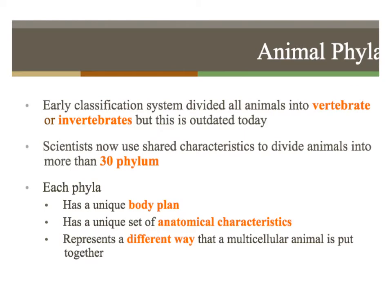For the animal phyla, the early classification system divided animals into vertebrates or invertebrates, like we talked about. This is a little bit outdated today. Now we divide animals into 30 phyla. We have that hierarchy: kingdom, phylum, class, order, family, genus, species.